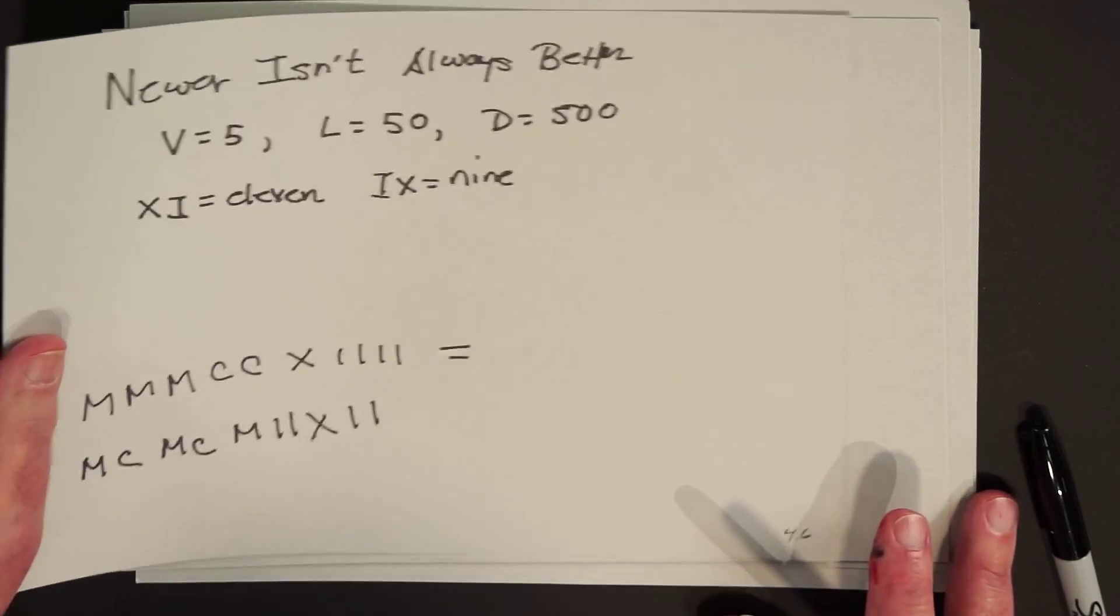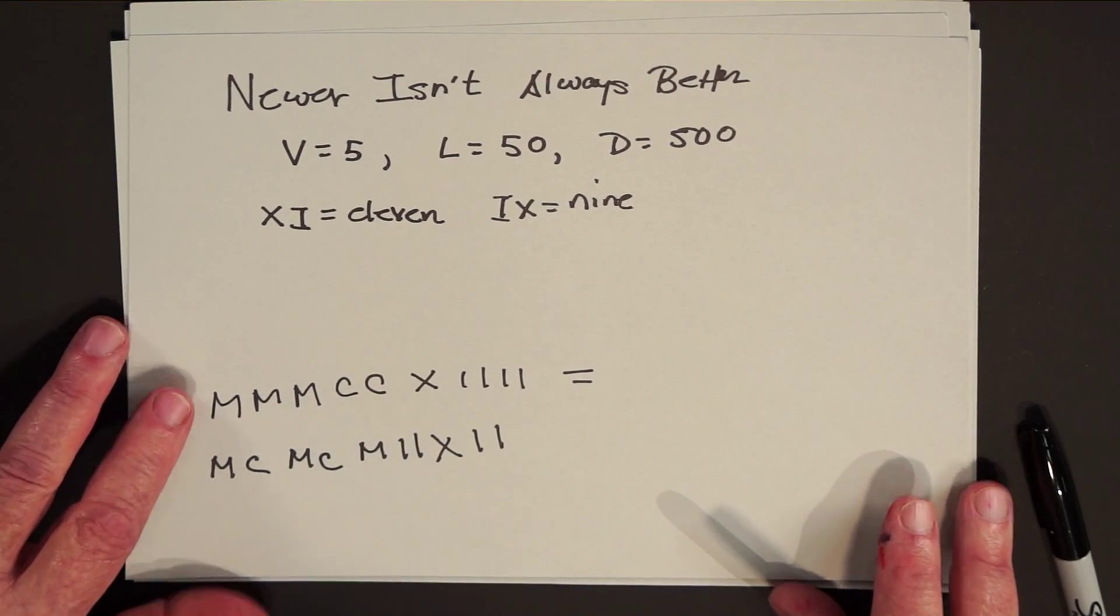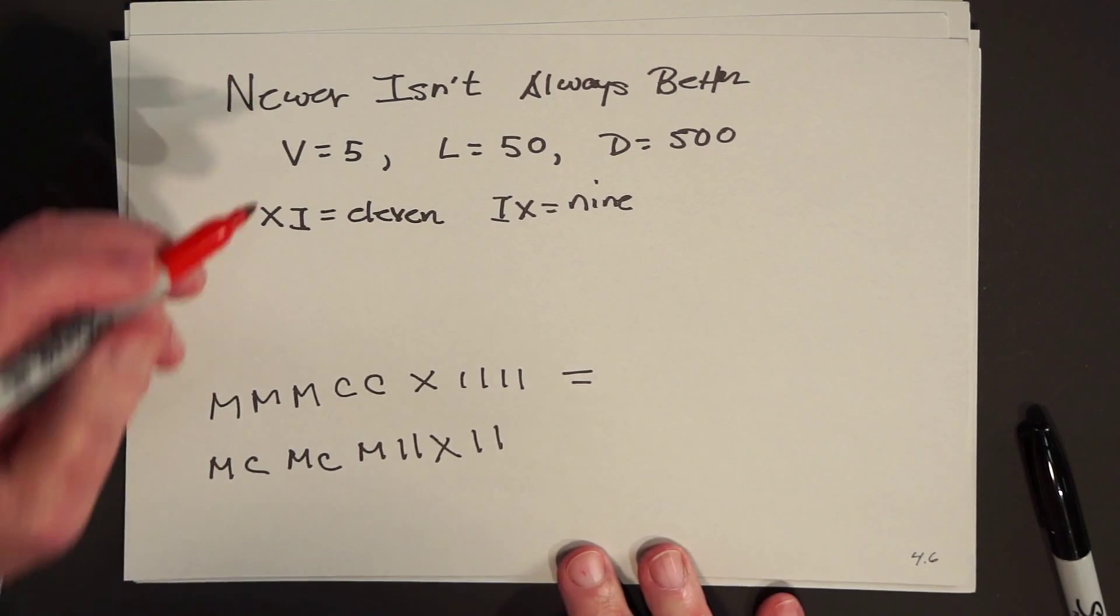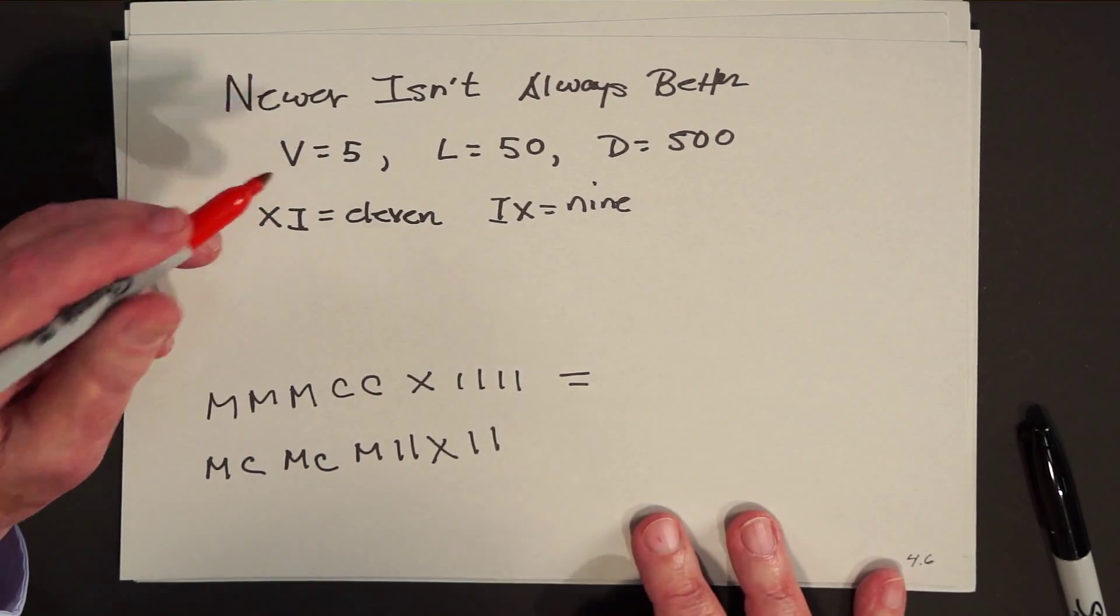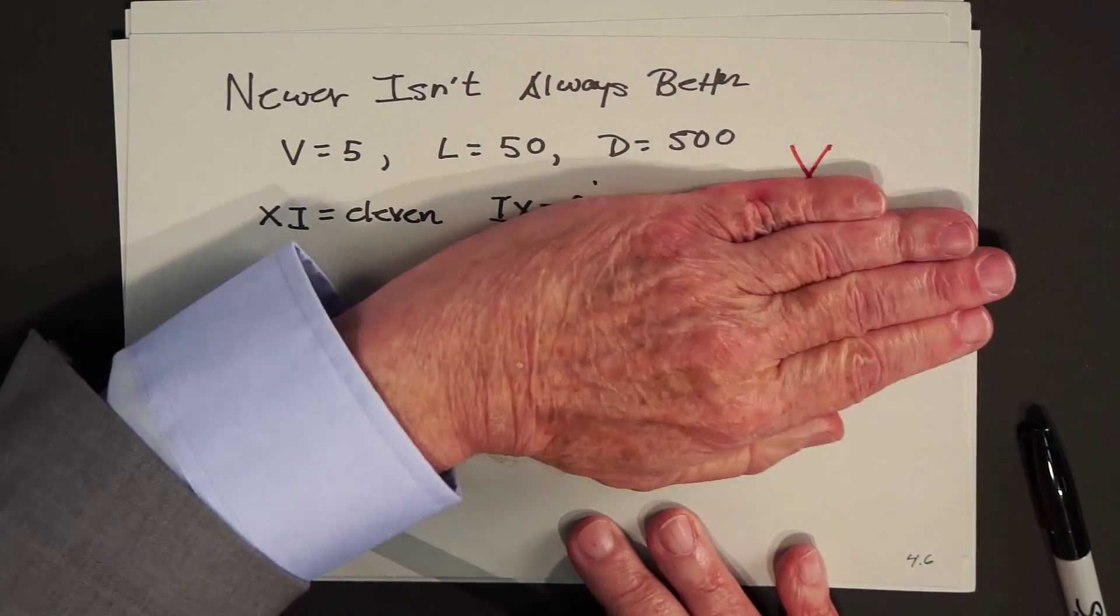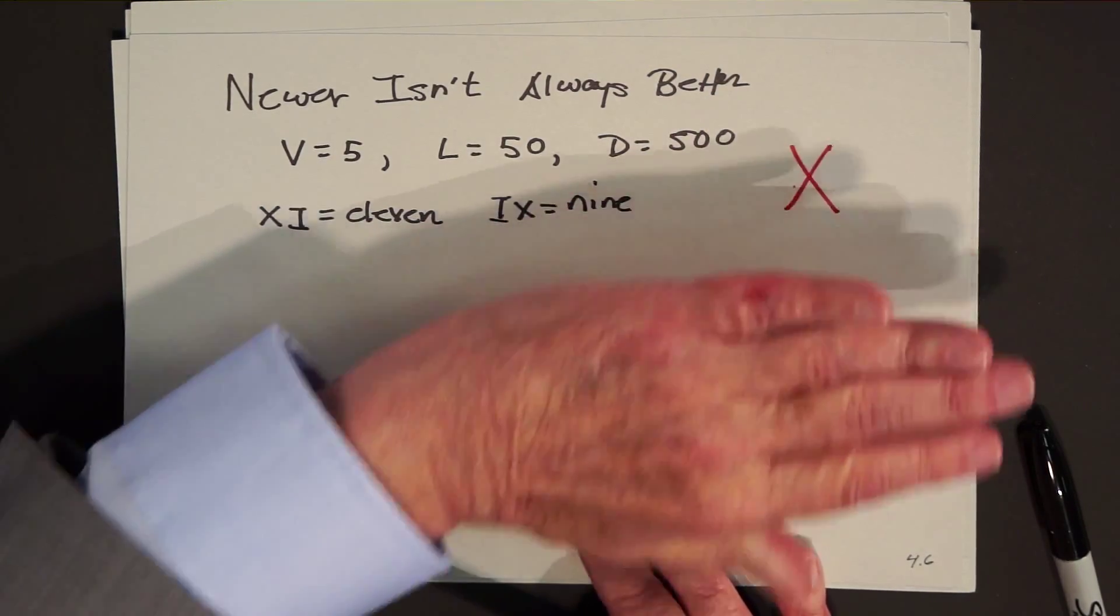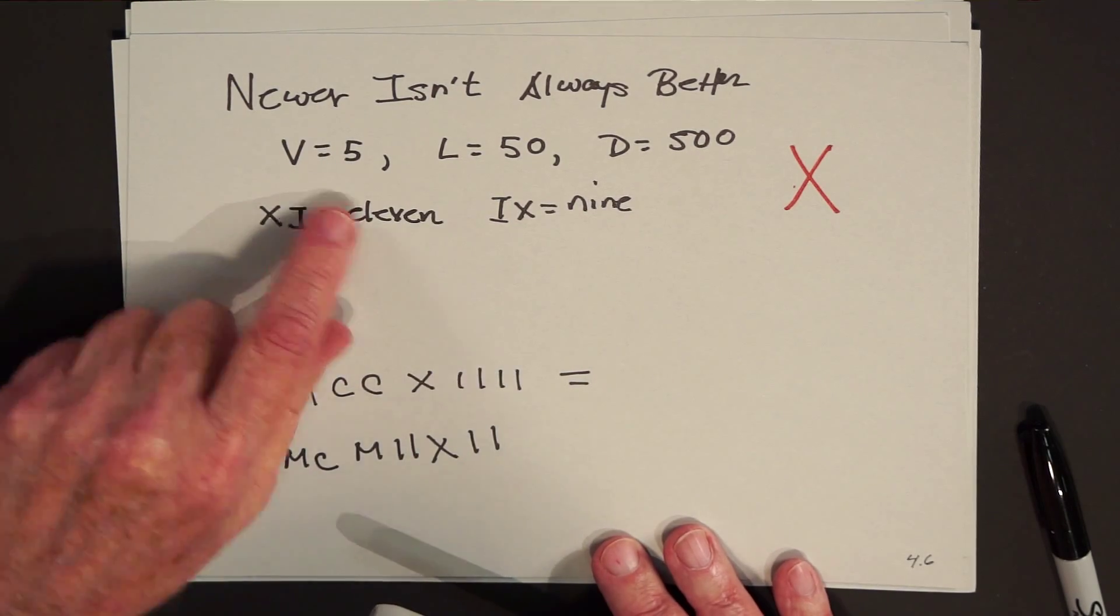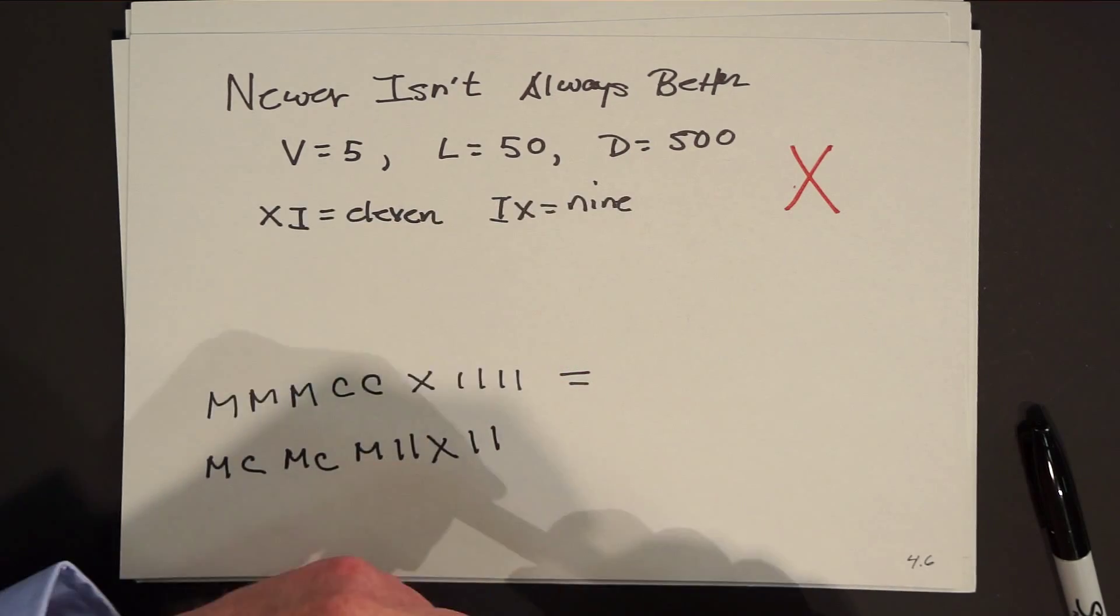And by the way, newer isn't always better. I don't know if you still teach Roman numerals in school. But when I went to school, we also learned that V stood for five. Where did they get the V from? Well, five is half of ten. So they just took the half of the X that looked like the letter V. And that stood for five. L stood for 50. D stood for 500.